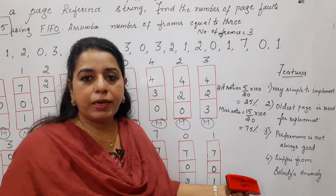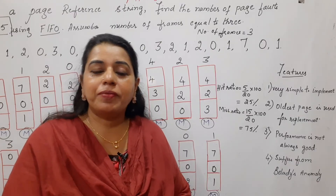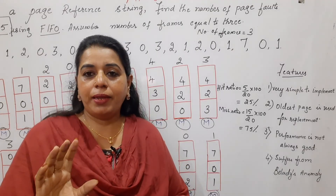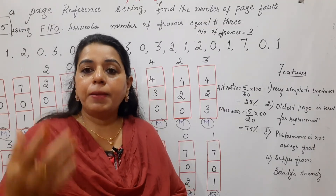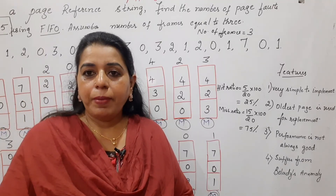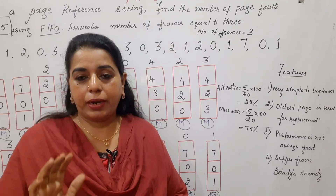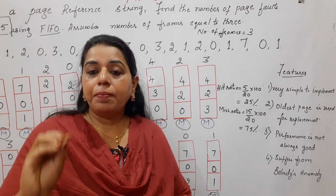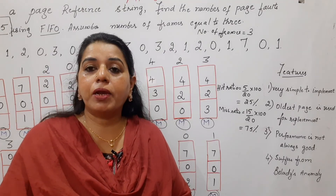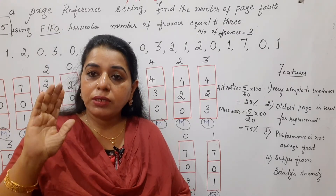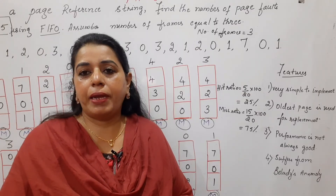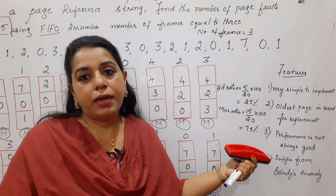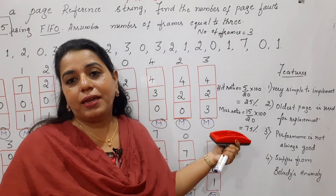Regarding why performance is not always good: the logic replaces the oldest page. Suppose a page was initialized at the very beginning and is never used again — replacing it is fine. But if a variable initialized early is used frequently throughout execution, then the CPU needs that page again and again. Though it was initialized in the beginning, it is in constant use, so a page fault will occur frequently, making performance poor.